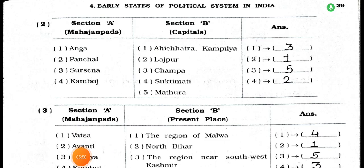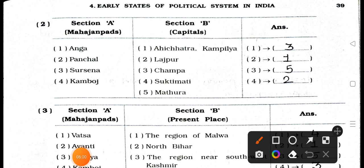Next page — match the column. Section A Mahajanpads: Anga, Panchal, Surshena, Kamboj. Section B capitals: 1. Achichatra/Kampilyon, 2. Lajpur, 3. Champa, 4. Pancal. Match: Anga matches with Champa (number 3). Panchal matches with Achichatra/Kampilyon (number 1).